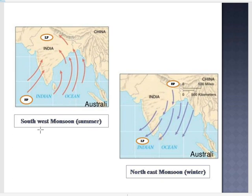The southwest monsoon winds are moisture-laden, as they blow from the ocean to the landmass, carrying enormous amounts of moisture, causing heavy rainfall in the Indian subcontinent. Whereas the northeast monsoon winds blow from the land to the ocean and are dry, as they cannot carry enormous amounts of moisture — the moisture content decreases.